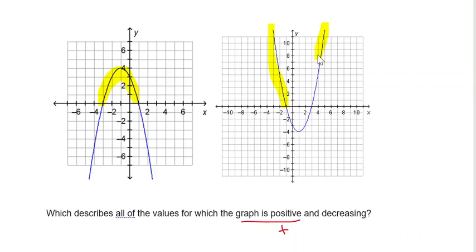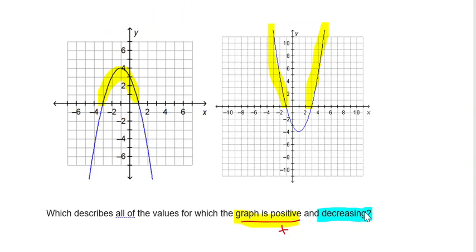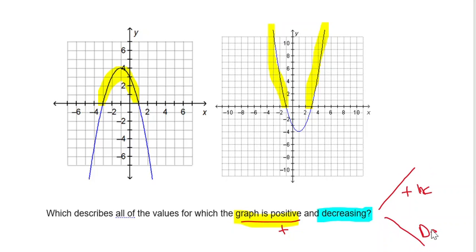We've highlighted the positive part. But here they're also asking us to identify decreasing. When we use the words increasing and decreasing, we're talking about our rate of change — that's like our slope. This would be increasing anywhere where, as you move from left to right, your y values are increasing — a positive slope. Decreasing means a negative slope.